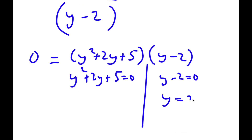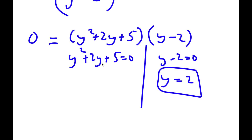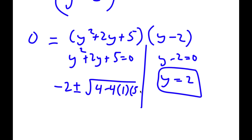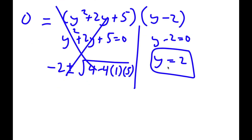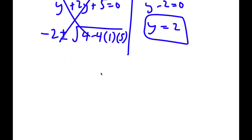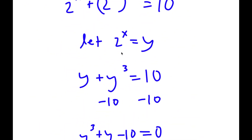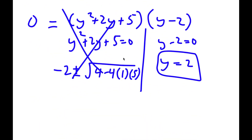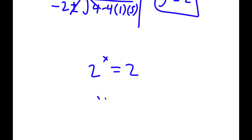For y minus 2 equals 0, y is obviously equal to 2. For y squared plus 2y plus 5 equals 0, using the quadratic formula — negative b plus or minus the square root of b squared minus 4ac, all over 2a — I get negative 2 plus or minus the square root of 4 minus 4 times 1 times 5, which gives the square root of negative 16. We can't take the square root of a negative number, so that doesn't work. My only solution is y equals 2, and since 2 to the power of x equals y equals 2, x is equal to 1.